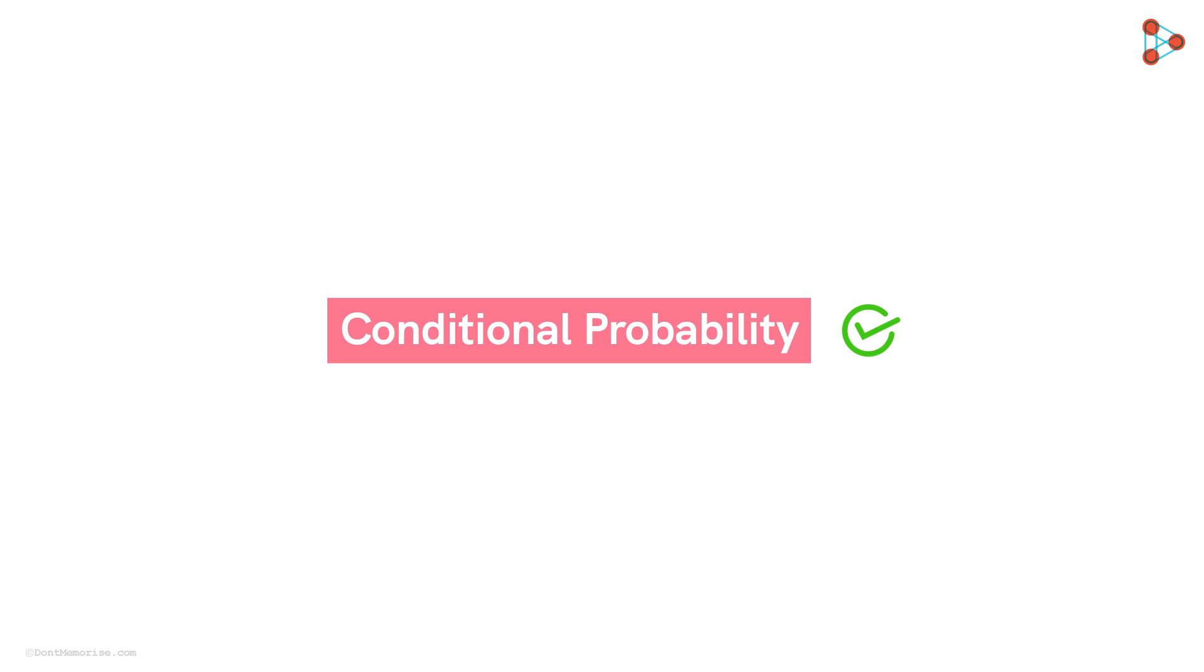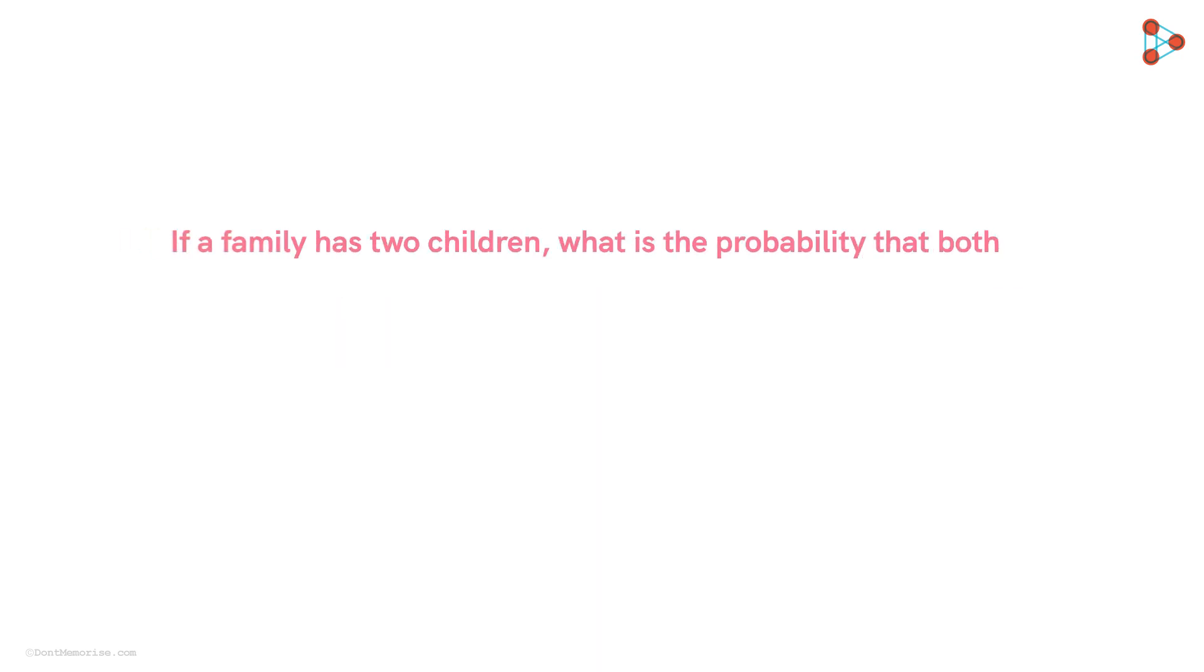Now in this video, we are going to solve an example based on it. If a family has two children, then what is the probability that both children are girls given that in the first case, at least one is a girl and in the second case, the youngest one is a girl.